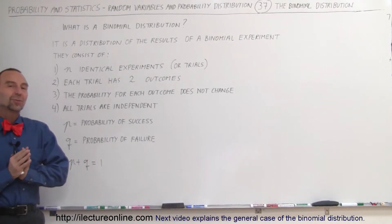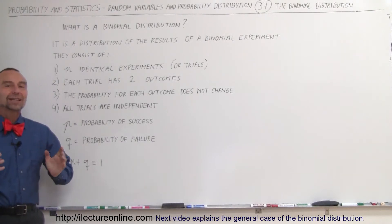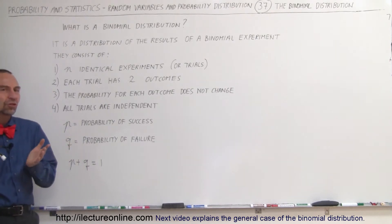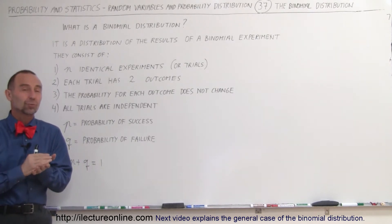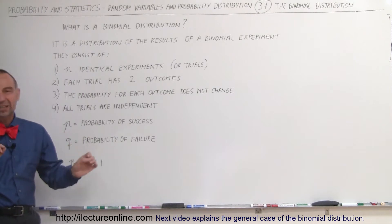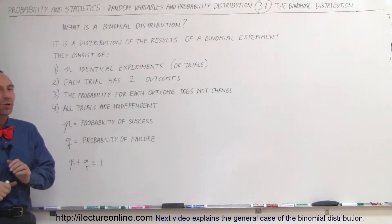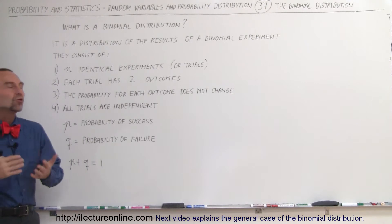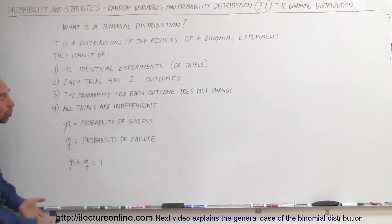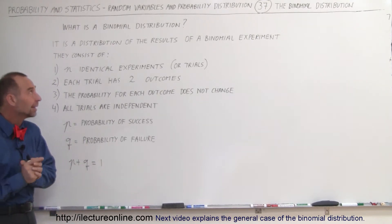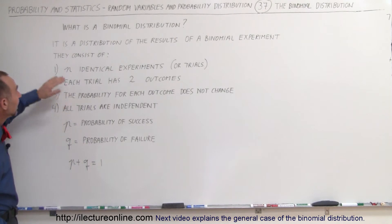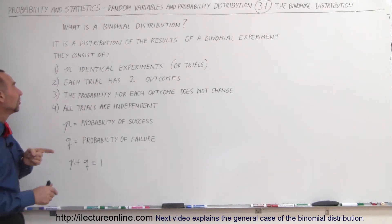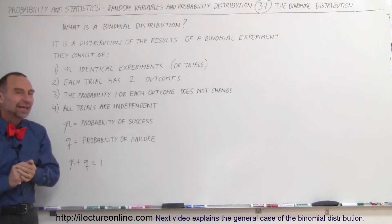Welcome to ElectronLine. We're going to take a look at the binomial distribution. The binomial distribution is a little bit different from the normal distribution, although there are a lot of connections between the two, which we'll explore in a bit. But now let's just take a look at what a binomial distribution is — it is a distribution of the results of a binomial experiment, and they consist of the following things.